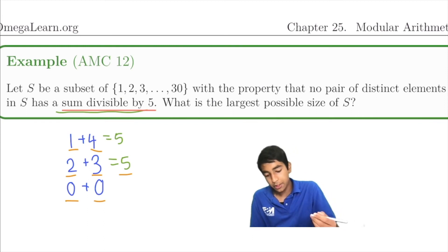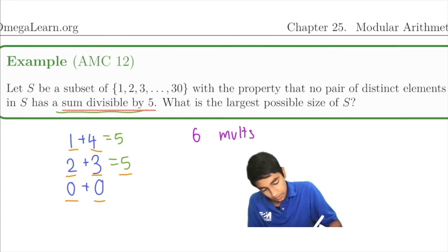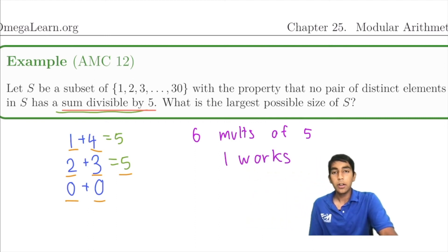So essentially what this means is out of the 6 multiples of 5 from 1 to 30, only 1 will work. Because if you have 2 that work, then we'll have 2 numbers that sum to remainder of 0 when divided by 5.